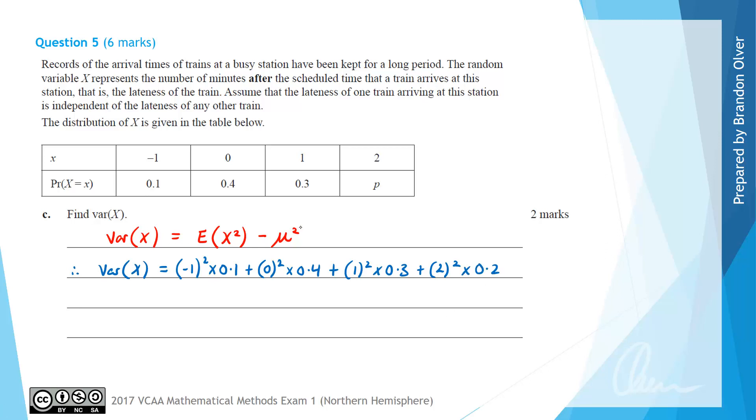And now the thing that people will always forget in this calculation is to subtract away the mean squared. So that's subtract away 0.6 squared. And that 0.6 was found in the previous question.